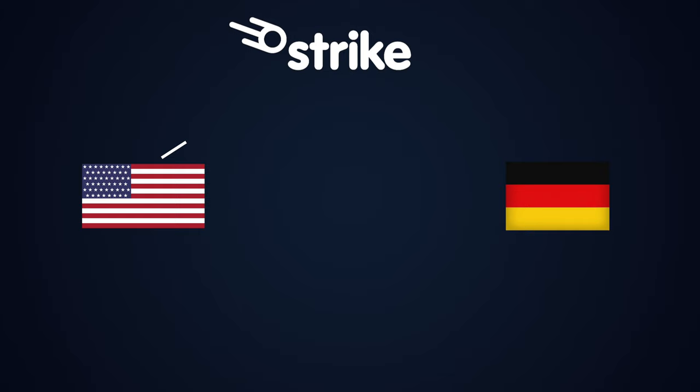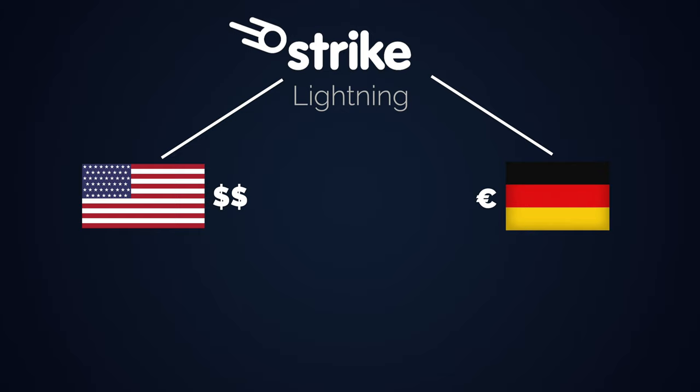The best example is Strike, which plays an important role in El Salvador and I expect it to become a worldwide phenomenon pretty quickly. Strike enables real-time currency changes, meaning you can send dollars from the US around the world instantly with no fees using the Lightning network and the recipient in Germany receives Euros. It works by buying Bitcoin with dollars, sending the Bitcoin through the Lightning network and then selling them for Euros at the destination, all within a second.